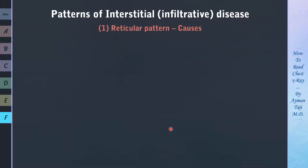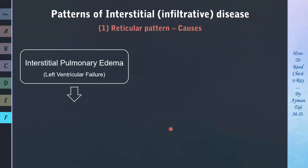Another cause of diffuse reticular pattern on a CXR is interstitial pulmonary edema due to left ventricular failure, where the left ventricle is unable to pump sufficiently so fluid accumulates abnormally in the extravascular compartment of the lung. If fluid continues to accumulate, interstitial edema will become alveolar edema, and we'll see fluffy cloud-like opacities, as we'll discuss later.